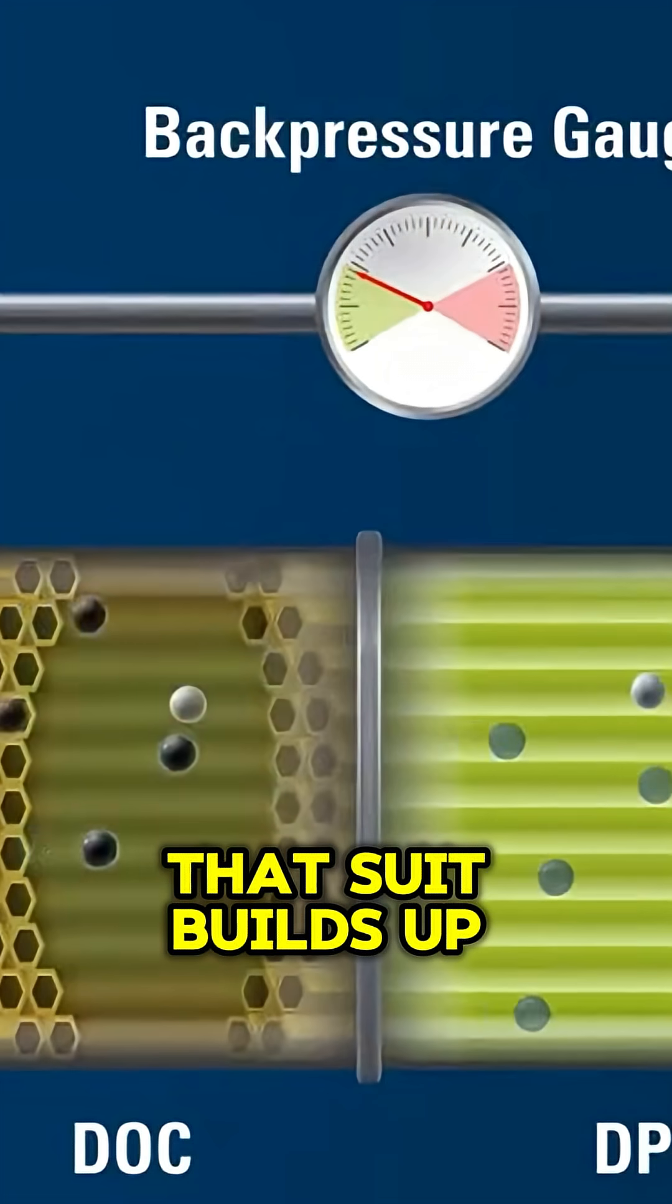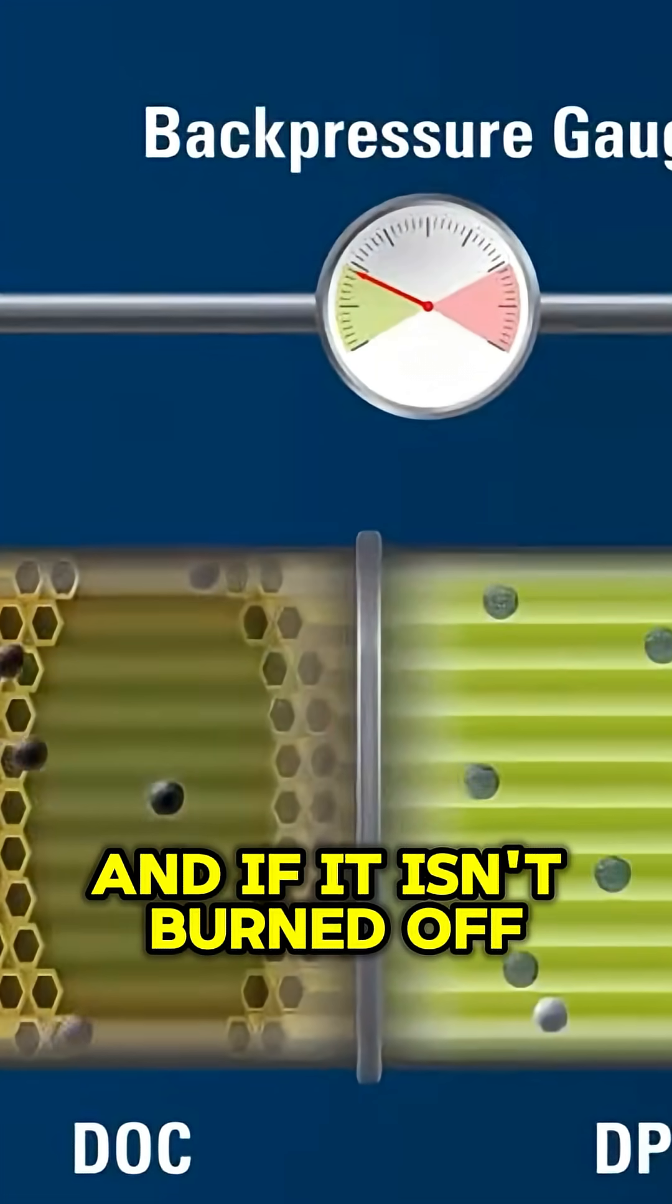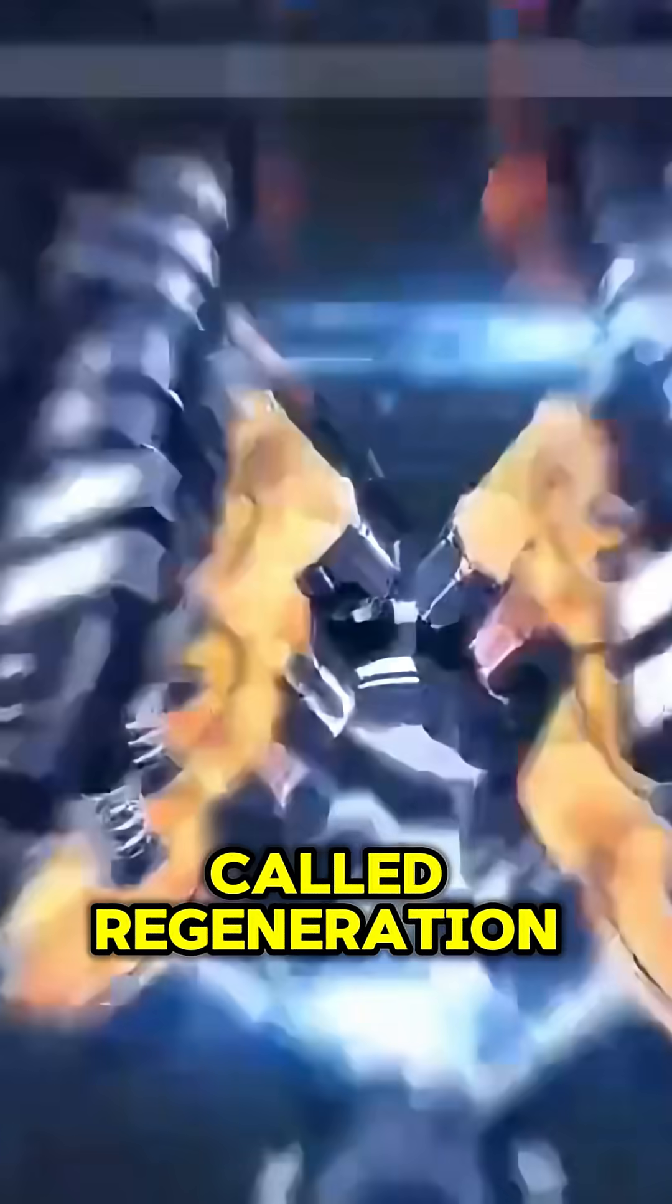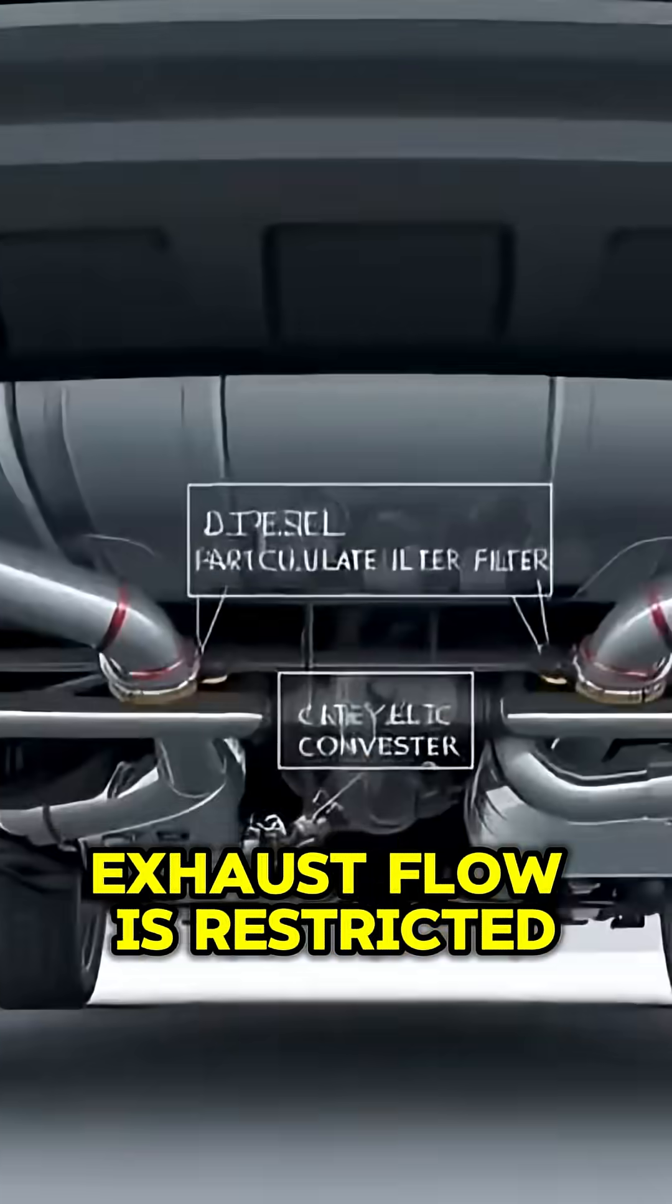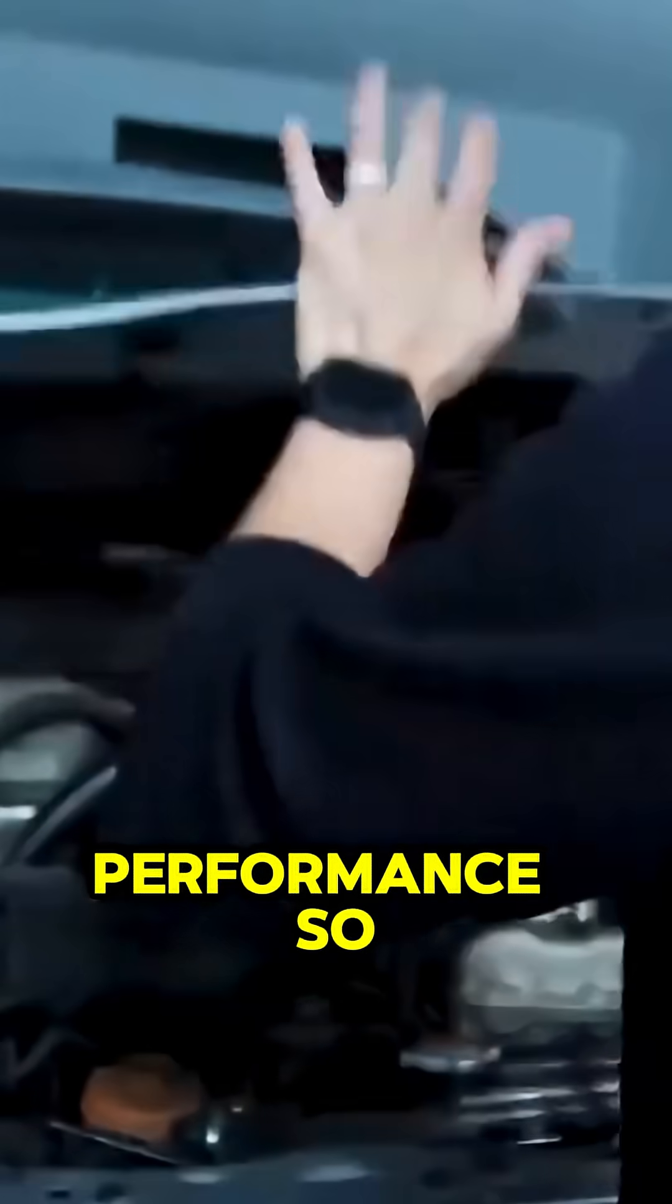Over time, that soot builds up. And if it isn't burned off through a process called regeneration, the filter starts to clog. When that happens, exhaust flow is restricted, back pressure rises, and your engine begins to lose performance.